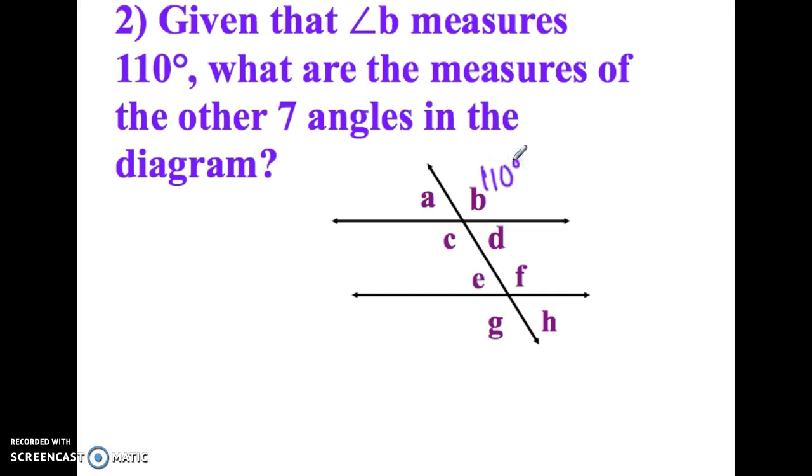One thing I want you to notice is that B and D make a straight line. So if 110 is B, D has to be 70 degrees because they add up to 180.